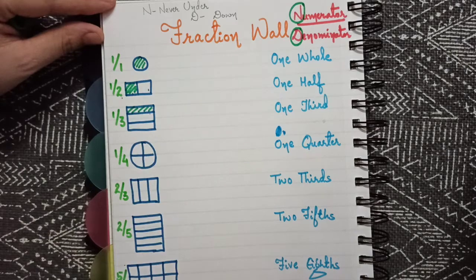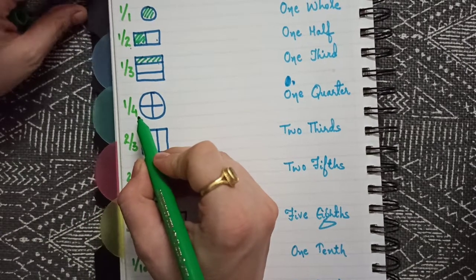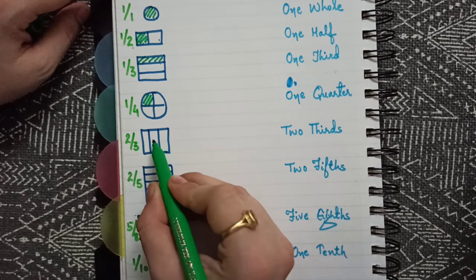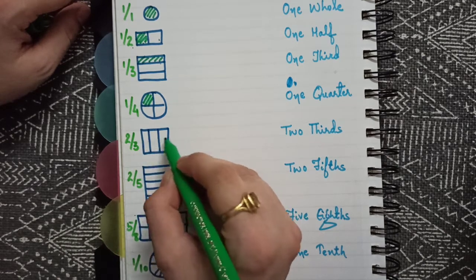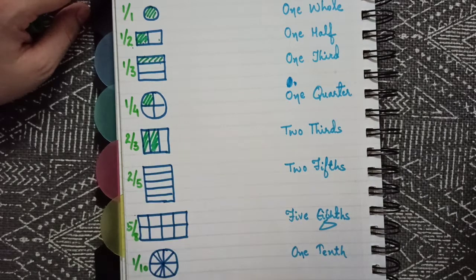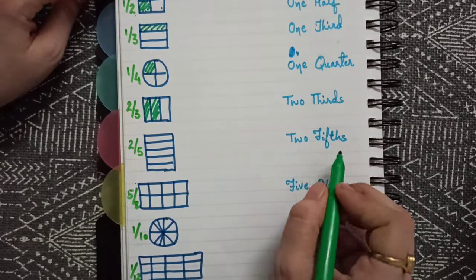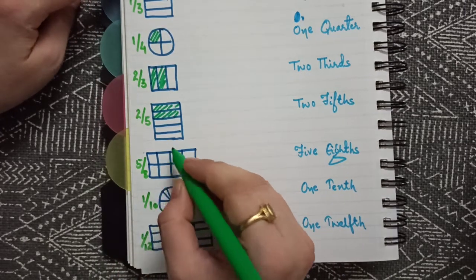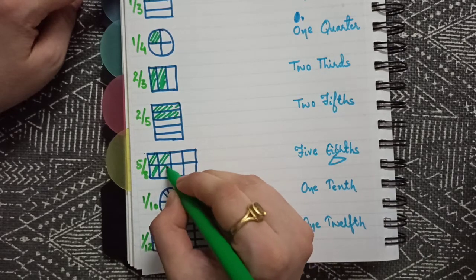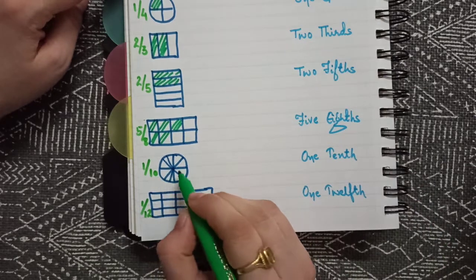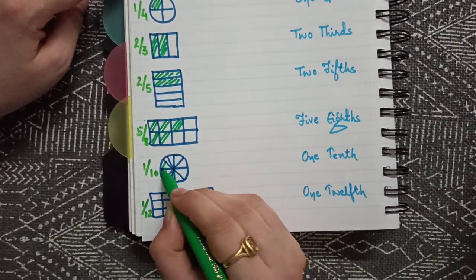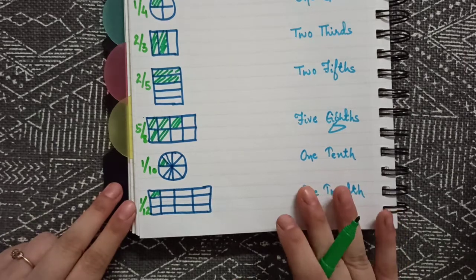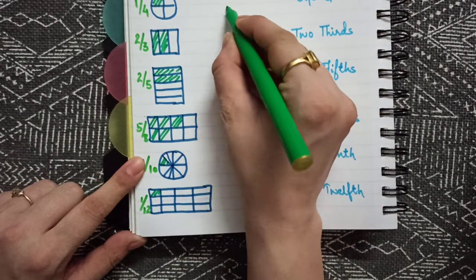Now one by four, which we call one quarter. Then two by three — that is two-thirds — three means three spaces, three columns are there, and numerator is two. Then two-fifths or two by five. Then five-eighths — one, two, three, four, five. Then one-tenth, meaning we have ten parts. And one by twelfth, that is one-twelfth. So this is a fraction wall.